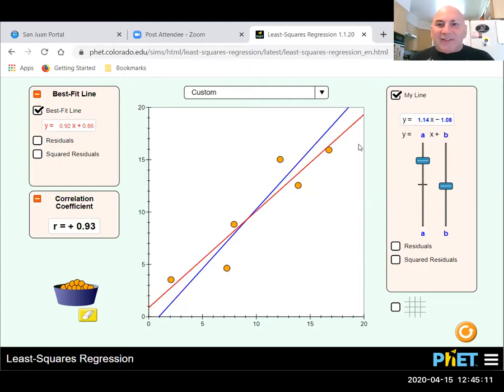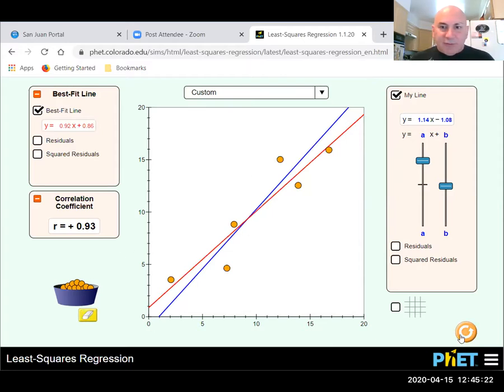So it's best we don't want to eyeball these things. We want to come up with the least squares regression line. So let's start again. I'm going to this time do a negative slope.